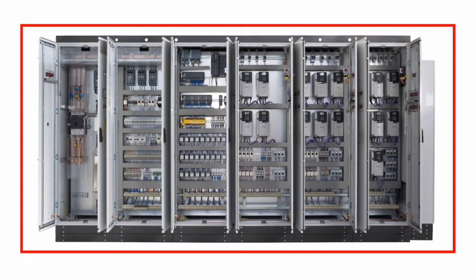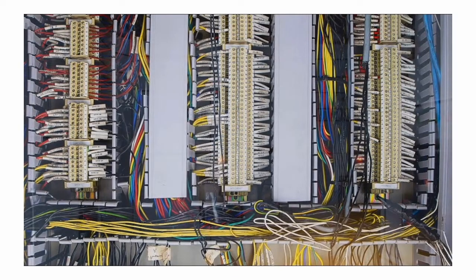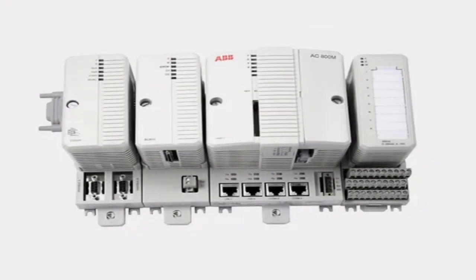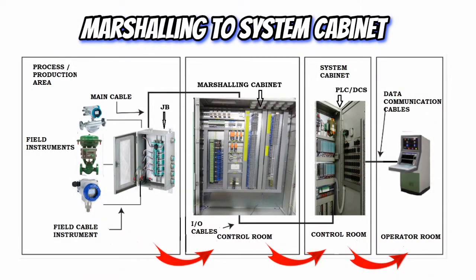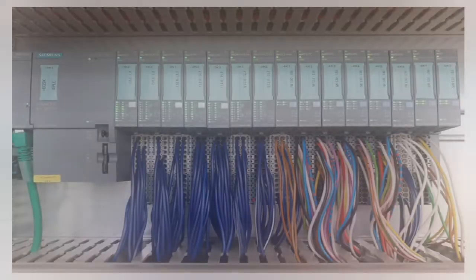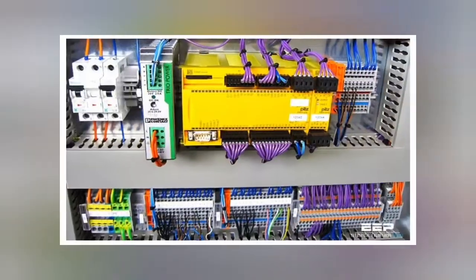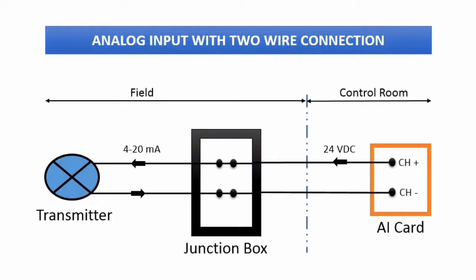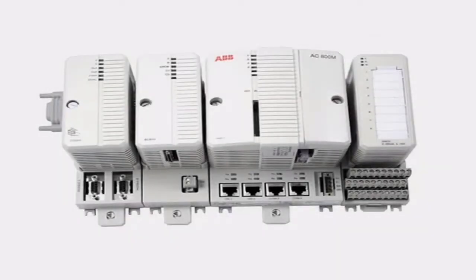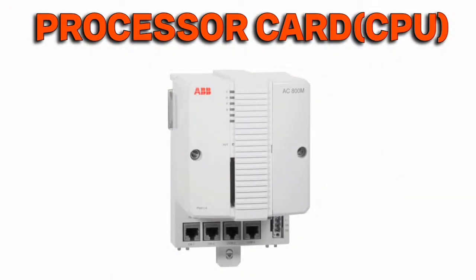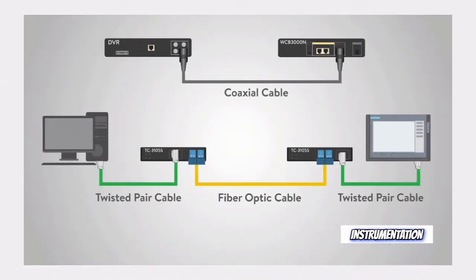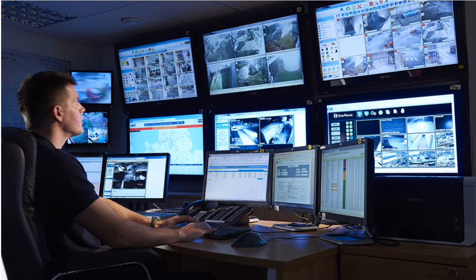Once the main cables are terminated in the marshaling cabinet, we have to route these field devices to their respective analog input card channels. We use internal wiring to route the field devices from the marshaling cabinet to the system cabinet. The analog input card converts the 4 to 20 milliamp signal coming from the field devices into an equivalent digital signal in binary codes, which is then communicated to the processor card. The processor card performs as per predefined or programmed instructions, and may have an inbuilt or separate Ethernet communication link used to display the measured process variables on the workstation.